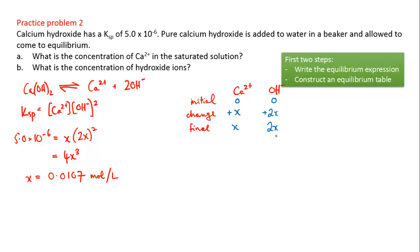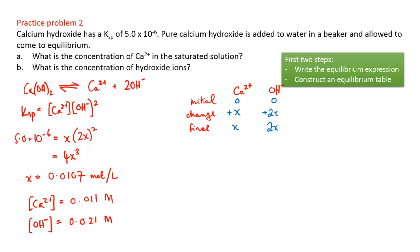Part B asks for the concentration of hydroxide ions. In the equilibrium table, hydroxide at equilibrium was 2X. So the concentration of hydroxide ions is 0.0107 times 2, which to 2 significant figures gives 0.021 mol/L.